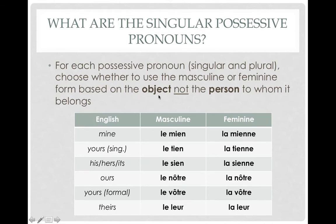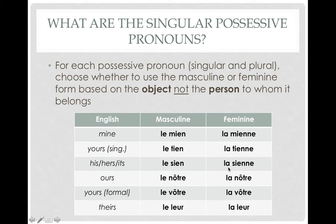When we use singular possessive pronouns, remember we're talking about the object, not the person to whom it belongs. Always go based on what you're describing, not based on yourself. For 'mine,' masculine is le mien, feminine is la mienne. For 'yours' — talking to someone you'd use tu with — masculine is le tien, feminine is la tienne. For 'his,' 'her,' or 'its,' masculine is le sien, feminine is la sienne.